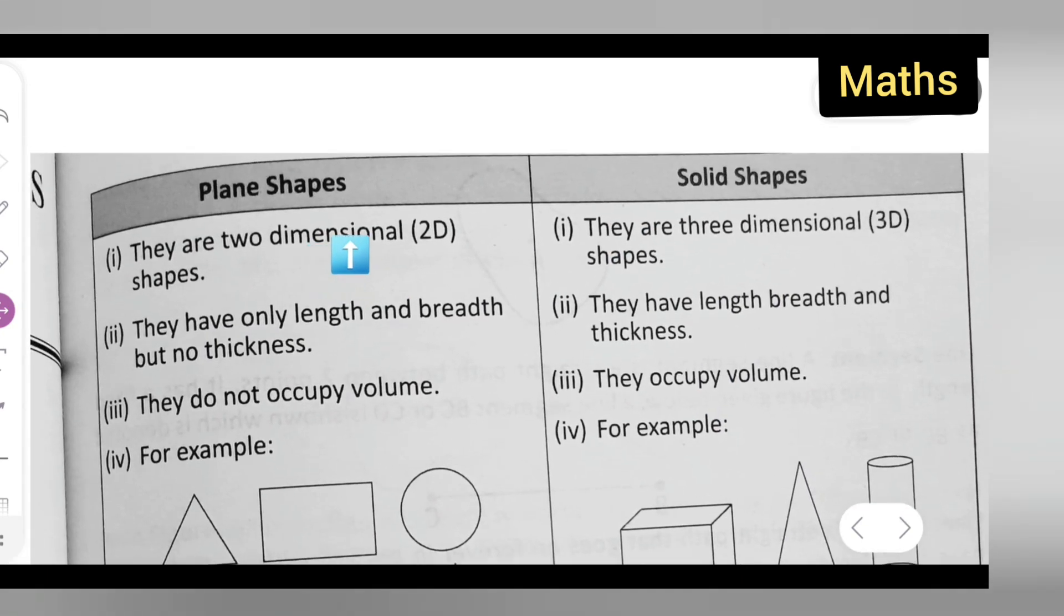I hope you can see this clearly. Plane shape. First point under plane shape is, there are two dimensions, 2D shapes. Under solid shapes, there are three dimensions, 3D shapes.